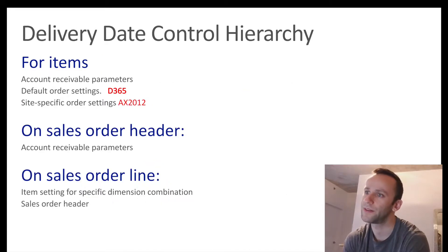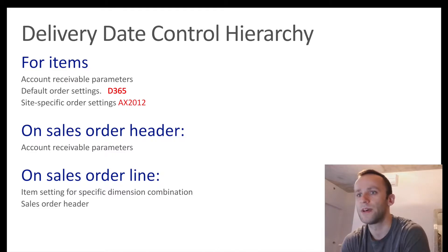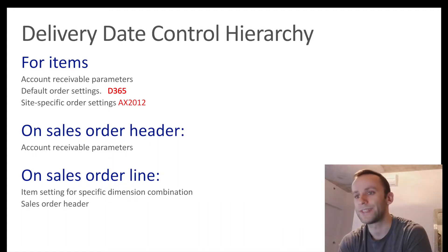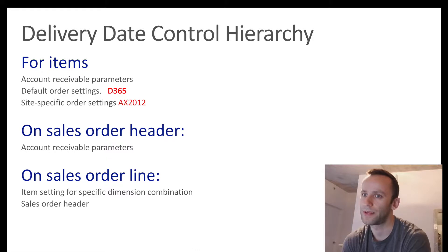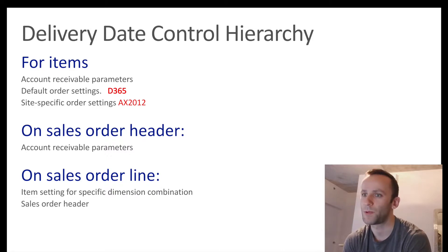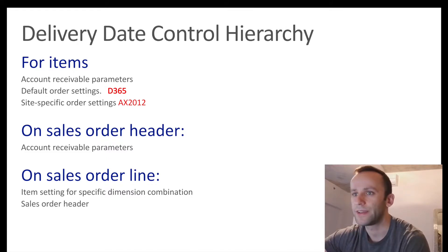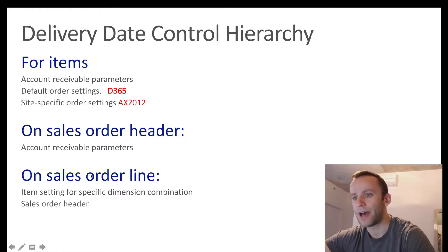Let's talk about delivery date control hierarchy and where the information comes from. We start from accounts receivable parameters - this is where you set up a delivery date control type, and I'm going to go into the system and show you where it is. Default order settings is a form that exists in both Dynamics 365 and AX 2012. However, site-specific order settings only exist in AX 2012. You can also check your delivery date control type on the sales order line.